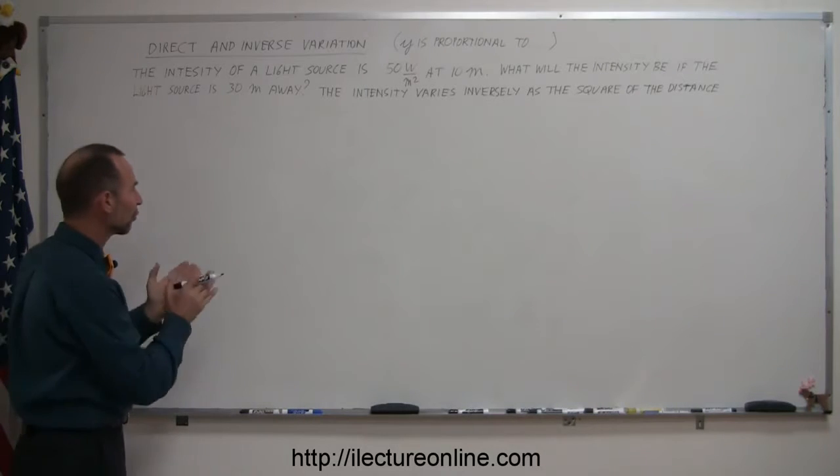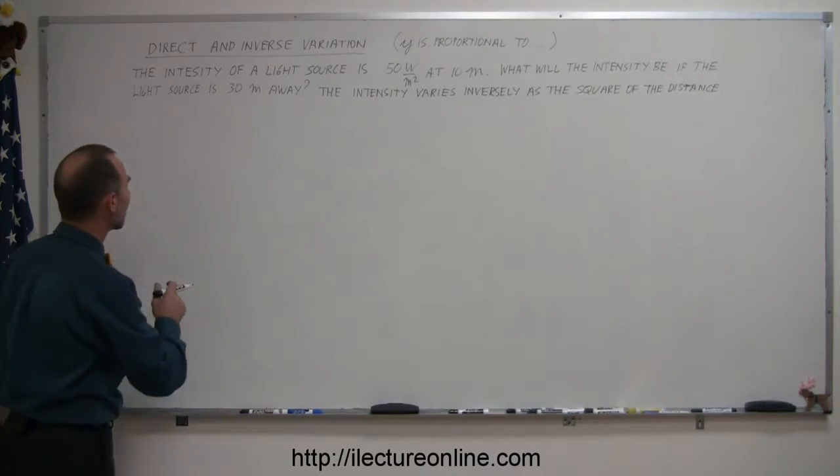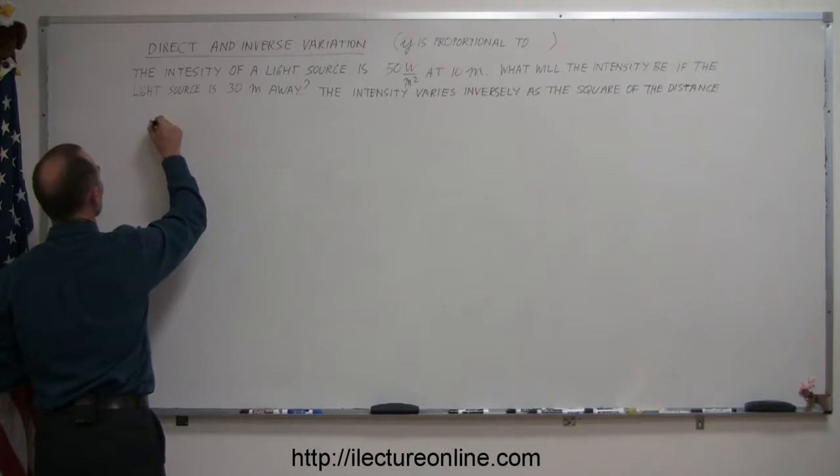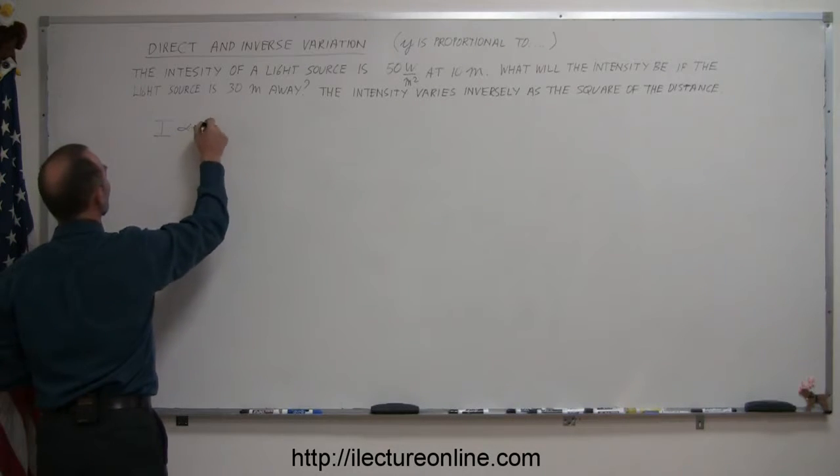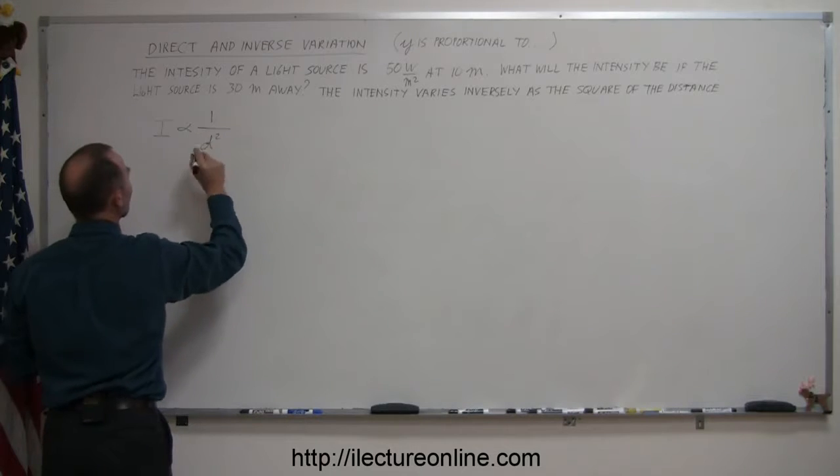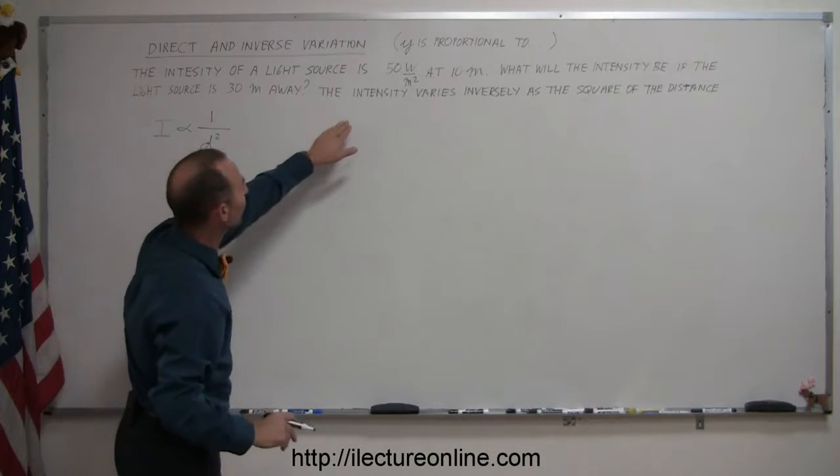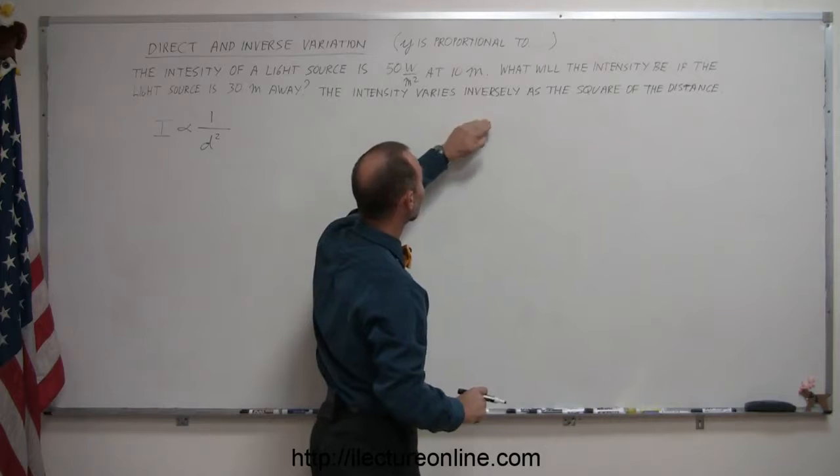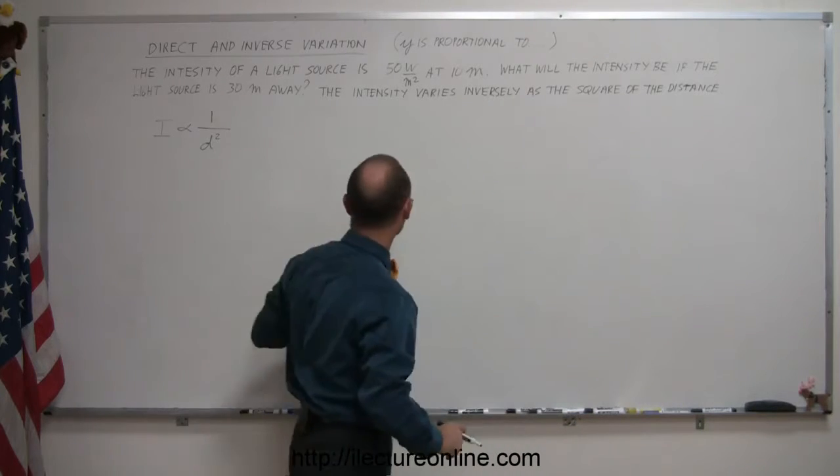So the strategy is to first write down the proportionality. In other words, the intensity is proportional to 1 over the distance squared. So that's what they're saying here: the intensity varies inversely, 1 over the square of the distance, the distance squared.